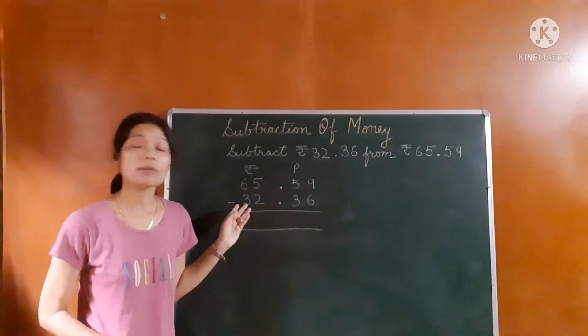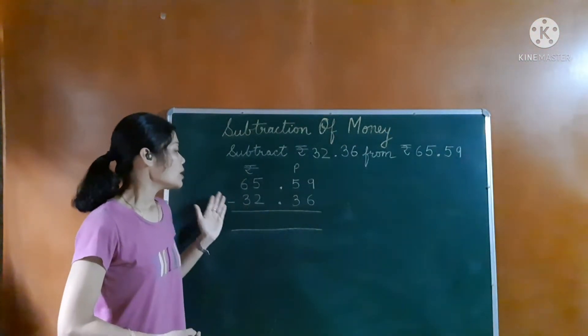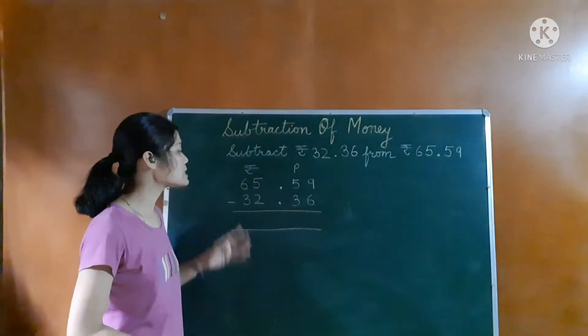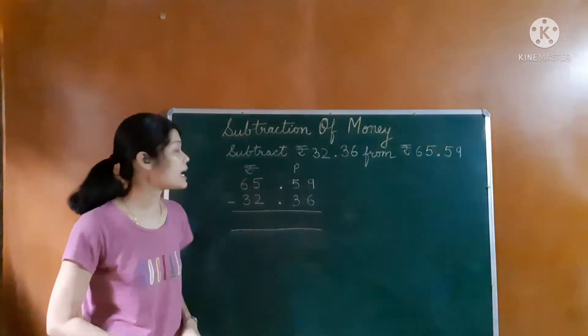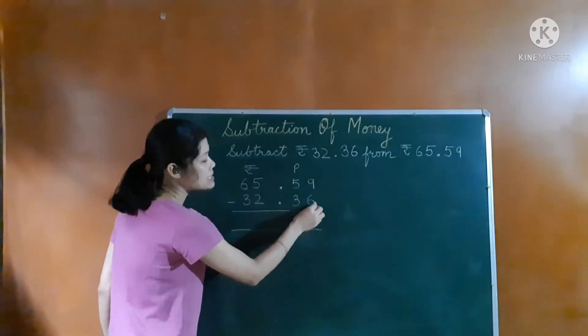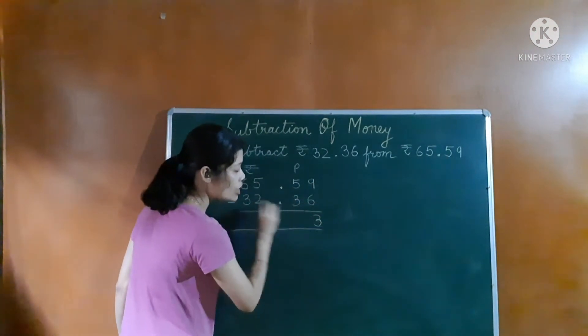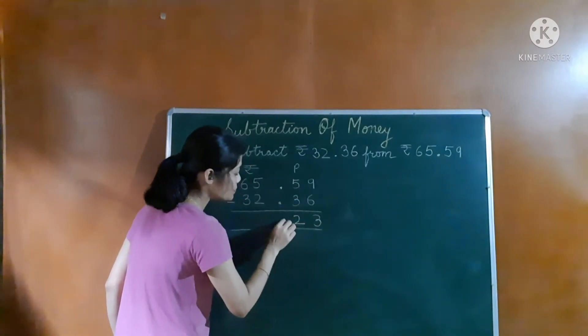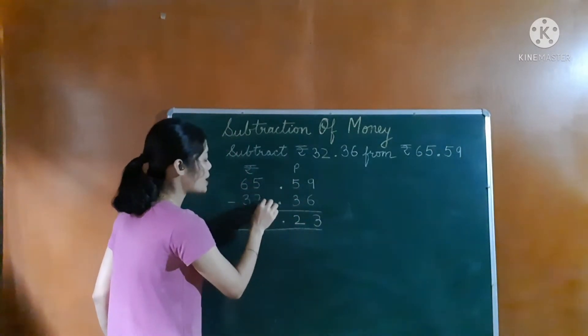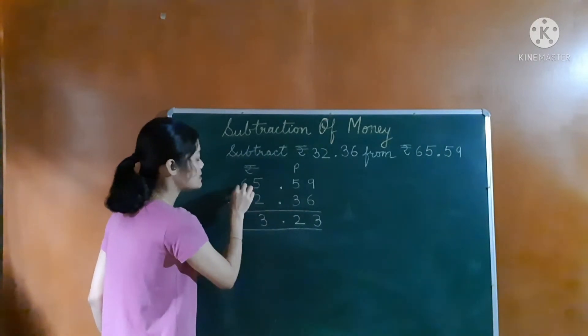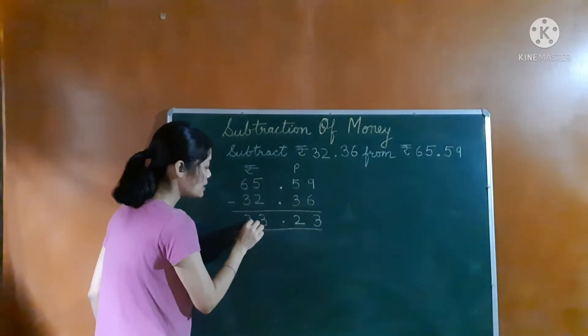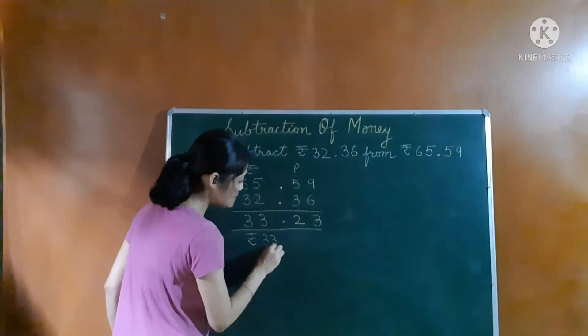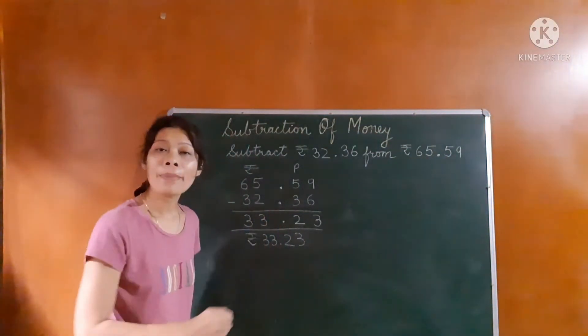Now let's move on to the first example. We have to subtract 32 rupees and 36 paise from 65 rupees, 59 paise. 9 minus 6 is 3, 5 minus 3 is 2, 5 minus 2 is 3, and 6 minus 3 is 3. So the answer is 33 rupees, 23 paise.